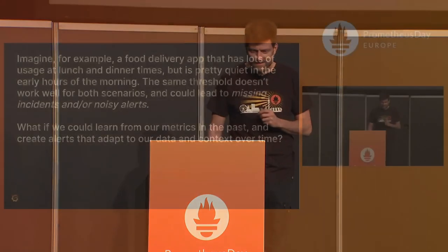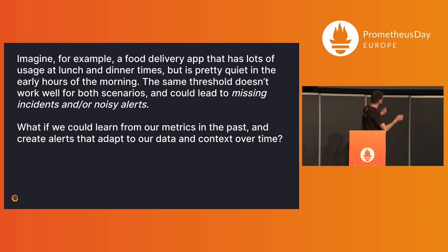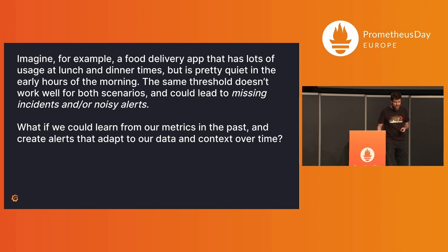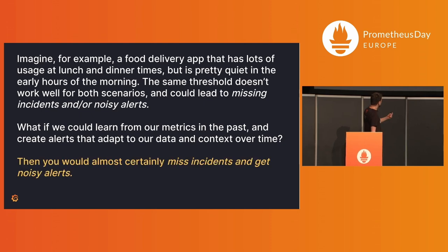Seven years later, anomaly detection is still the hotness. Here's some marketing language: imagine a food delivery app that has lots of usage at lunch and dinner times but is pretty quiet in the early hours of the morning. The same threshold doesn't work well for both scenarios and could lead to missing incidents or noisy alerts. What if you could learn from metrics in the past and create alerts that adapt to your data in context over time? My honest answer is: you would almost certainly miss incidents and get noisy alerts. That's the sad truth.